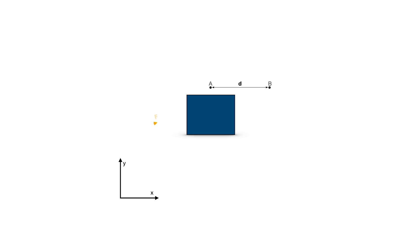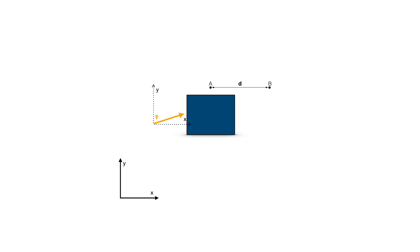Here are the axes. Force, being a vector, is acting on this box in a direction that doesn't lie on either of the axes — it is rather somewhere in the middle. To specify its direction and magnitude, we bring our axis closer to the vector and see how many units we need to cover on the x-axis to reach the end of the vector. Let's say it's three units, and similarly on the y-axis, let's say it's four. These are called the components of the vector.